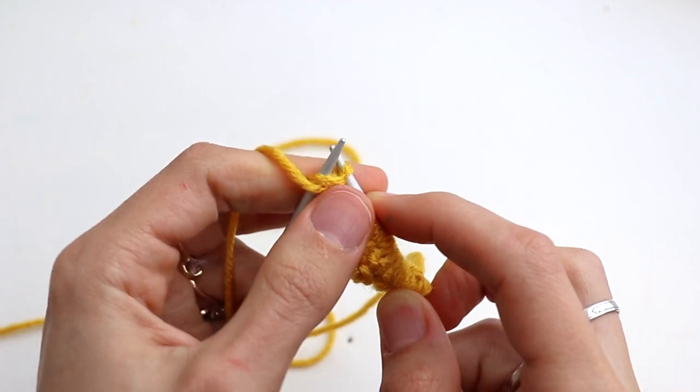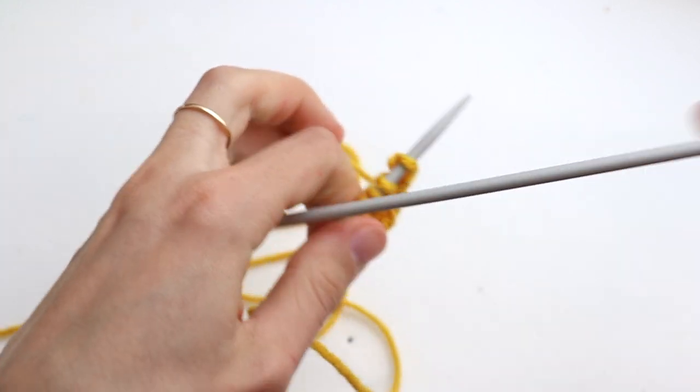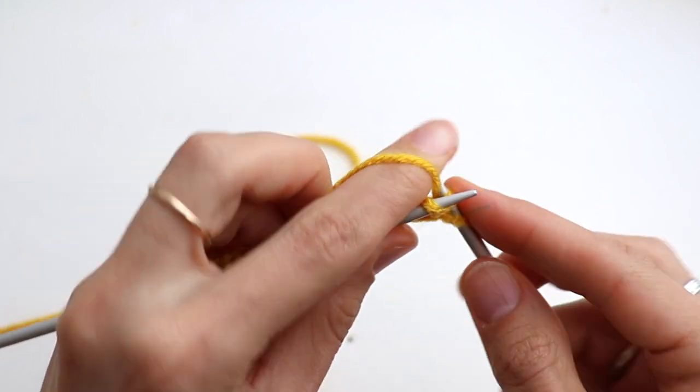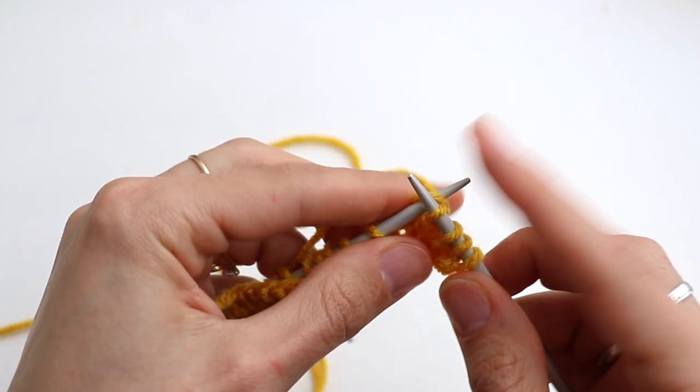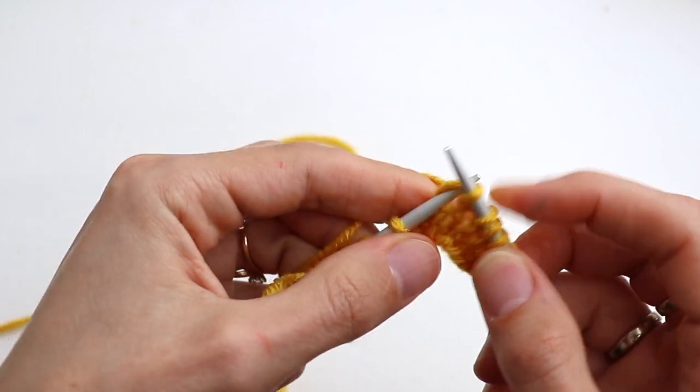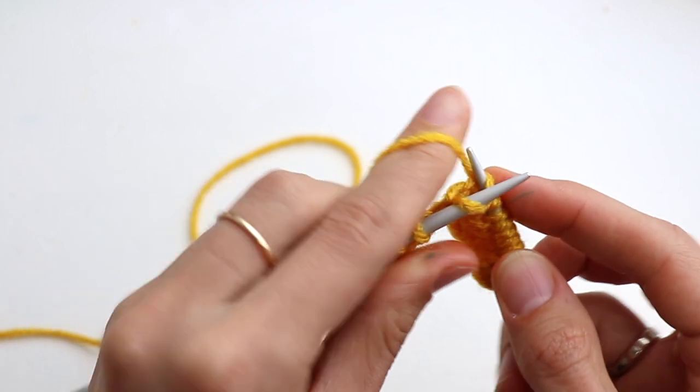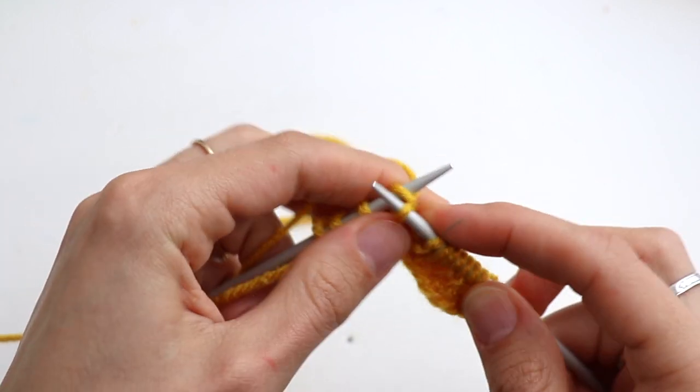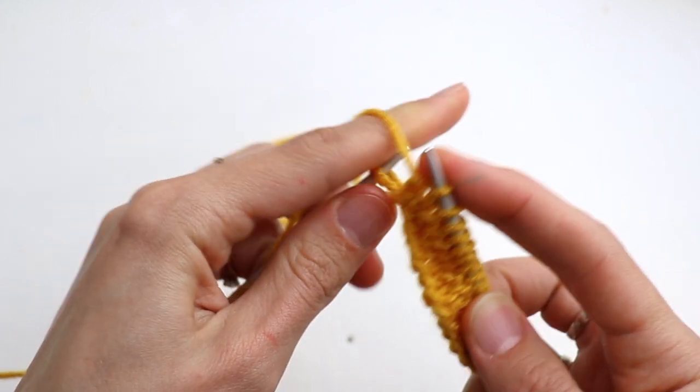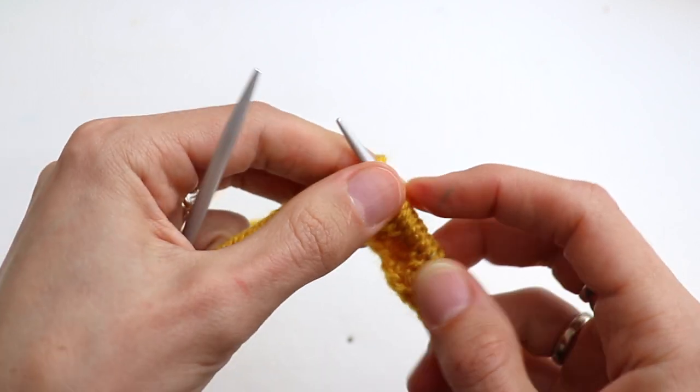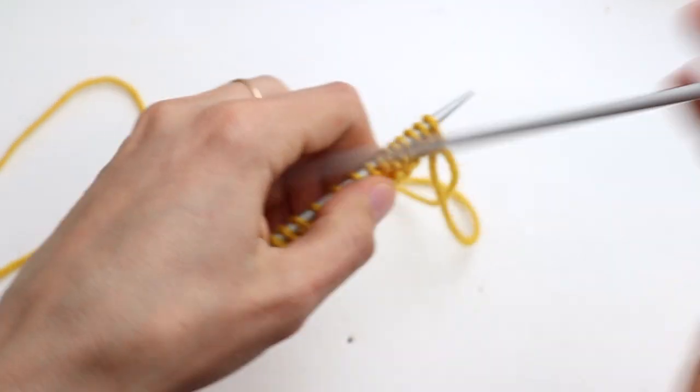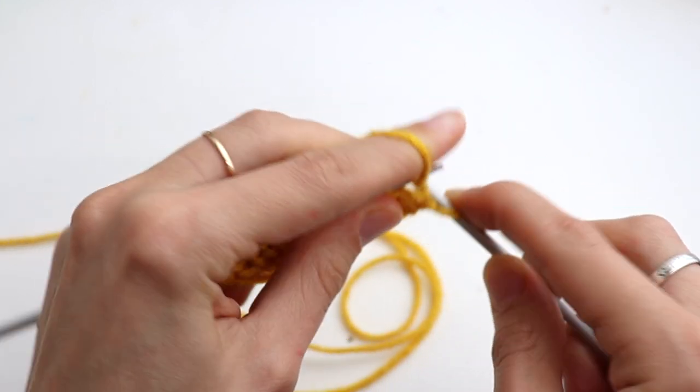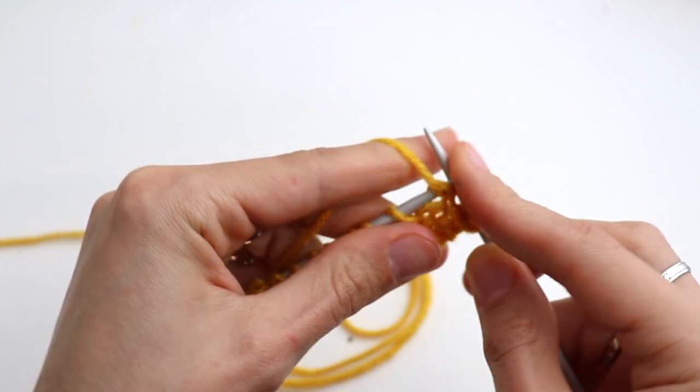And purl the last selvedge stitch. Turn. Row number two: slip the first stitch and knit all other stitches till the last one, till the selvedge. Purl the last selvedge stitch. And row number three same as row number one: slip the first selvedge stitch and purl all other stitches.